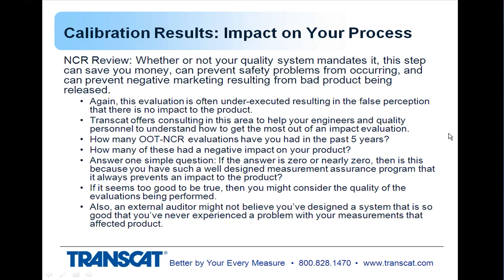Ask yourself: how many of these evaluations have you had in the past five years, and of those, how many had a negative impact on your product? If it's near zero or is zero, what's the probability of that? Does that seem right? Is there possibly something not being done correctly in your NCR review? If it seems too good to be true, consider the quality of the evaluations being performed — because if you don't, an external auditor might. They may say you've had a lot of evaluations and either you have a very good quality system, or something's not right about the process.